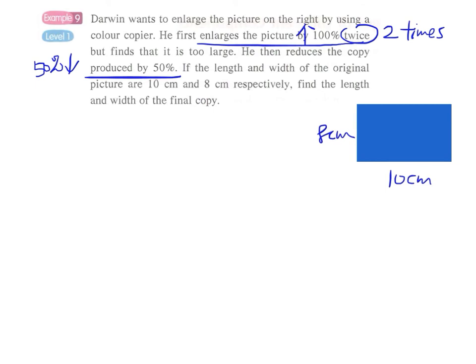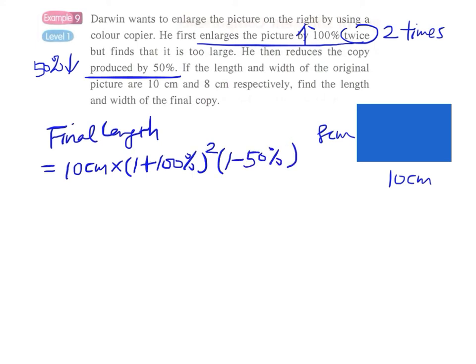Let us find the final length first. The length is 10 cm, and this is enlarged by 100% twice, so we have a square term here. Then this is reduced by 50%, so we multiply by (1 - 50%).